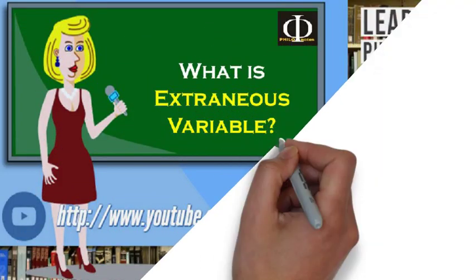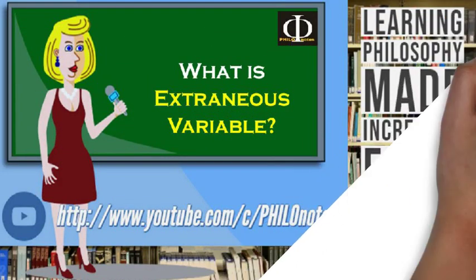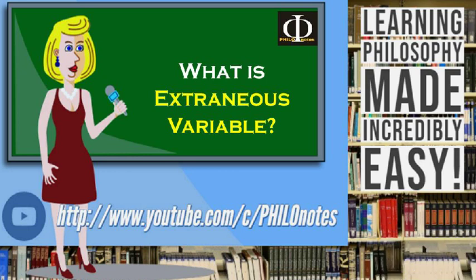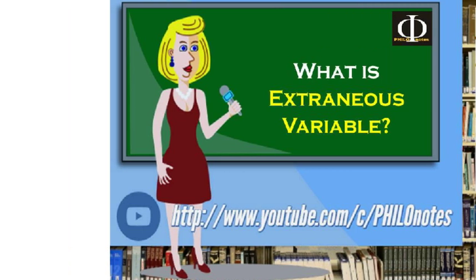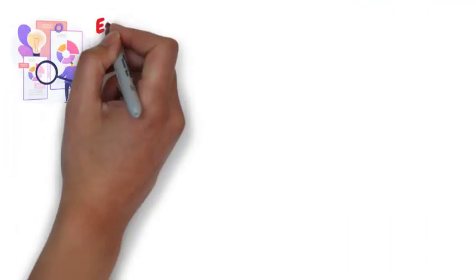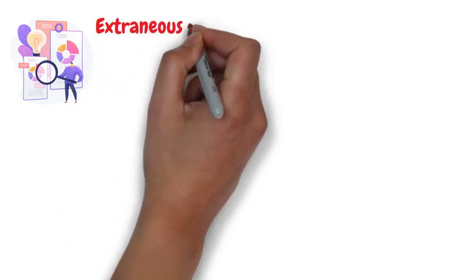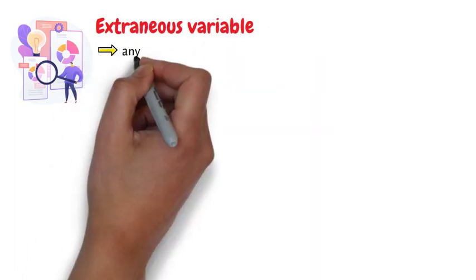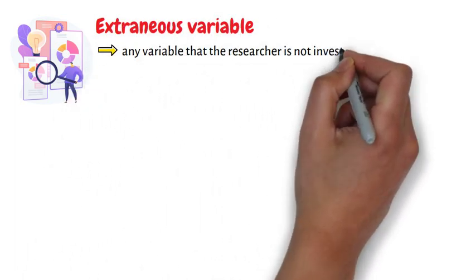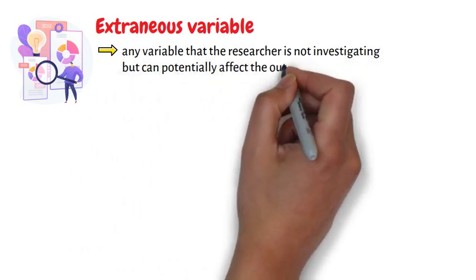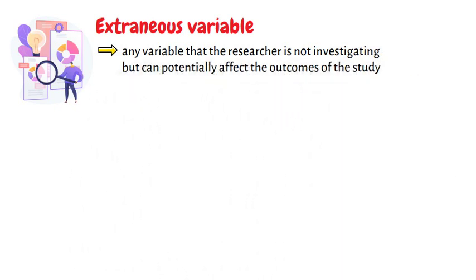What is an extraneous variable? In an experiment or research project, an extraneous variable is any variable that the researcher is not investigating but can potentially affect the outcomes of the study.